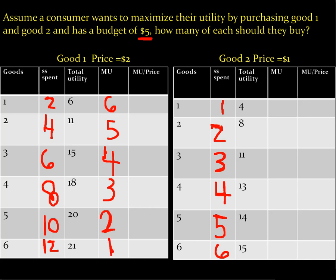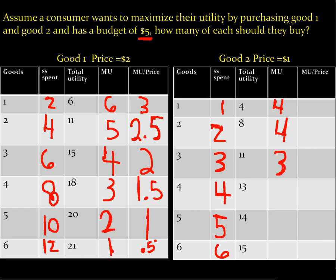Marginal utility over price for good one: 6 over 2 is 3, then 2.5, then 2, then 1.5, then 1, and 0.5. For good two, marginal utility is 4, 4, 3, 2, 1, and 1 — divided by $1, so MU/price is just 4, 4, 3, 2, 1, and 1.